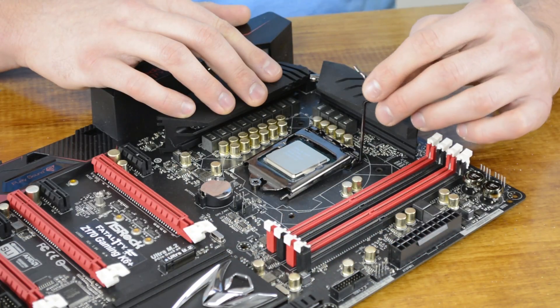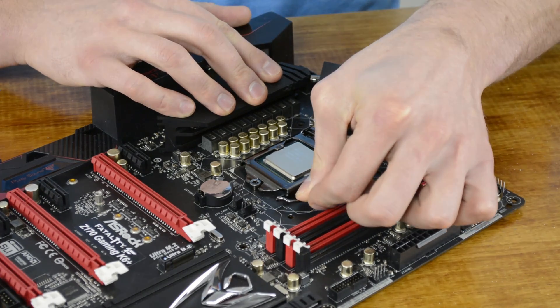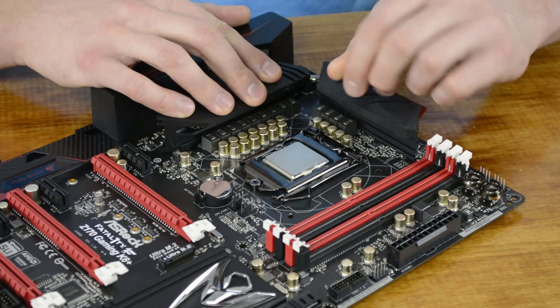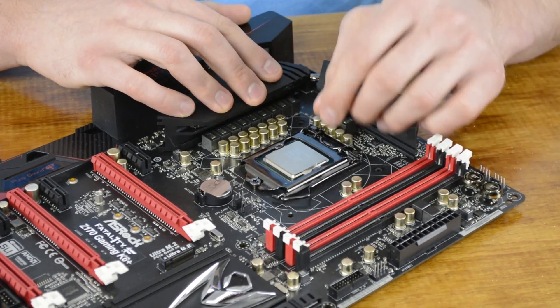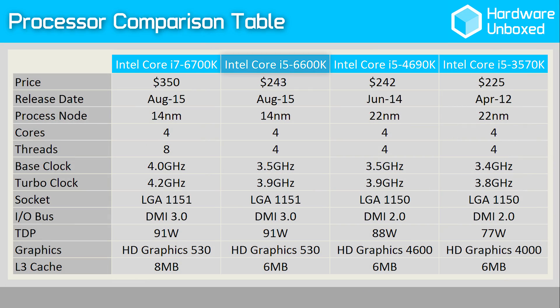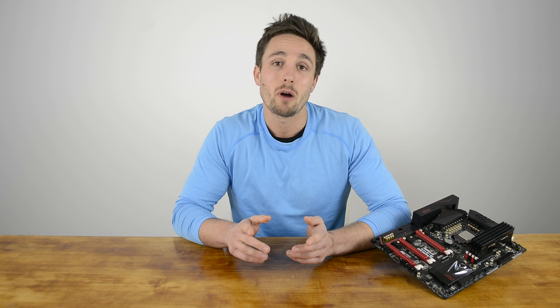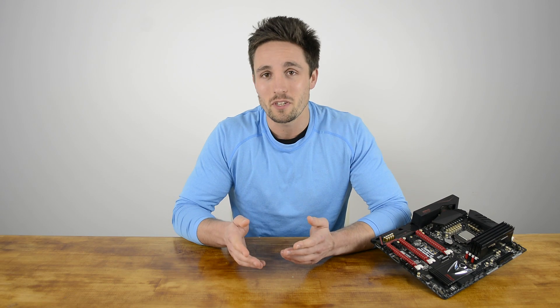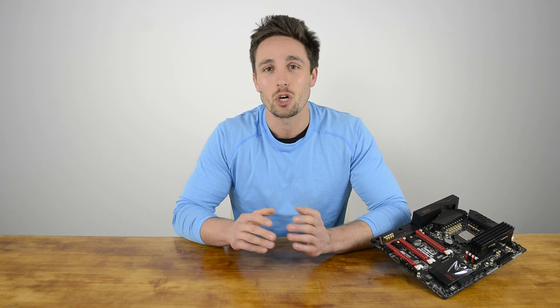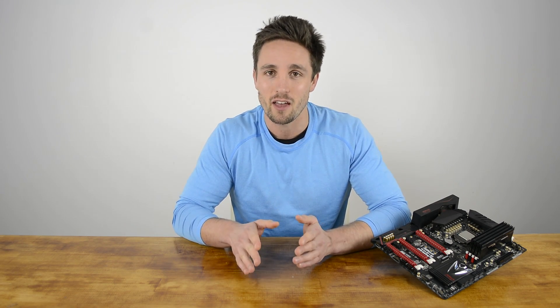The Core i5-6600K isn't that dissimilar to the 6700K. It too is a 91W quad-core processor designed to take full advantage of DDR4 memory. However, the 6600K is a little over 30% cheaper than the 6700K, as we expect to see a retail price of around $240. So you might be wondering what you're missing out on by saving all that money and going for the cheaper 6600K.